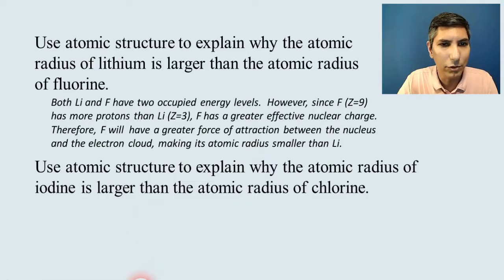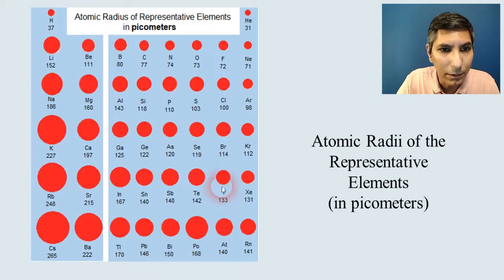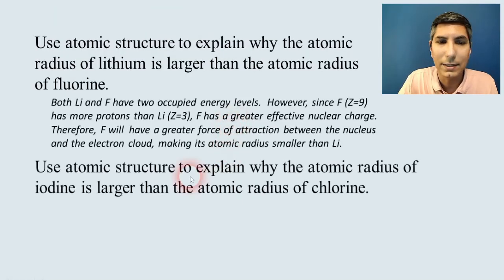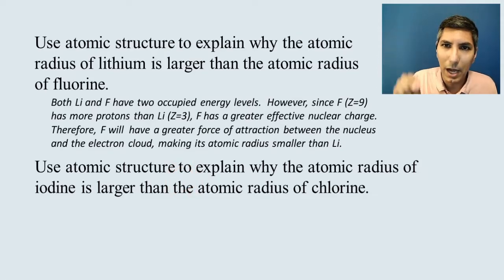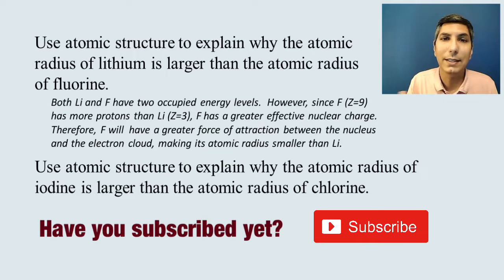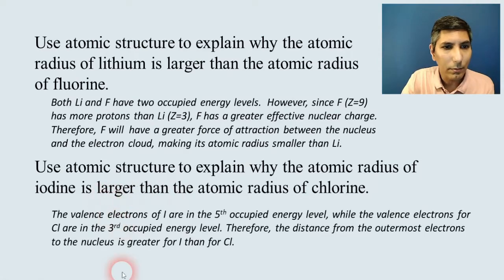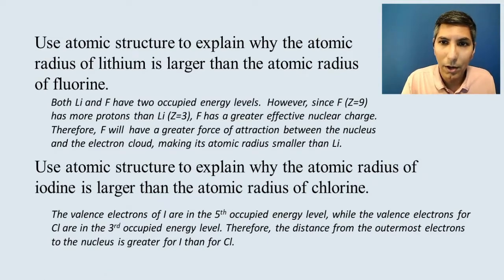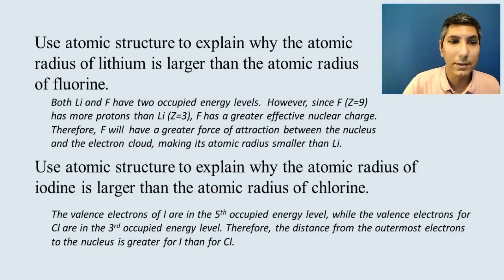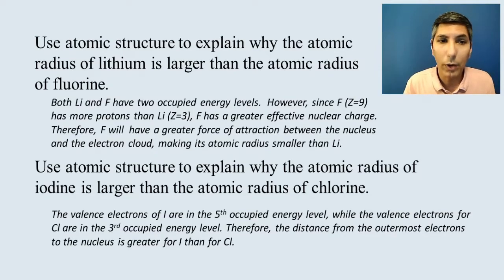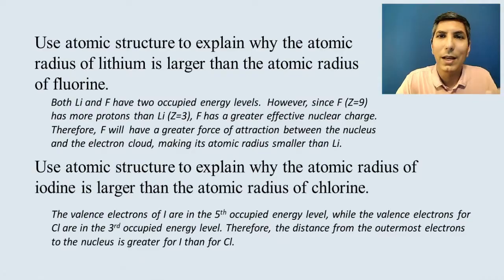Now let's use atomic structure to explain why the atomic radius of iodine is larger than that of chlorine — iodine is more than 30% larger. Since these are top and bottom, we think in terms of electron distance. The valence electrons for iodine are in the fifth occupied energy level, while for chlorine they are in the third occupied energy level. So the distance from the outermost electrons to the nucleus is much greater in iodine because it has more electron shells, more occupied energy levels.